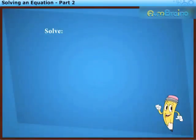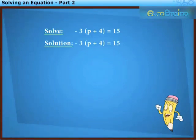Let us solve the equation minus 3 into p plus 4 is equal to 15. In this equation, to simplify the LHS, let us divide both the sides by minus 3.